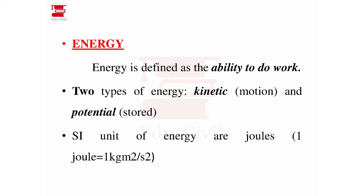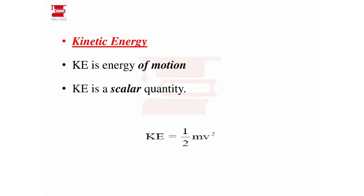The SI unit of kinetic energy is joules — 1 kilogram meter squared per second squared. There are two types of energy: potential energy and kinetic energy. Kinetic energy is the energy of motion and it is a scalar quantity. The kinetic energy equation is one-half mv squared.